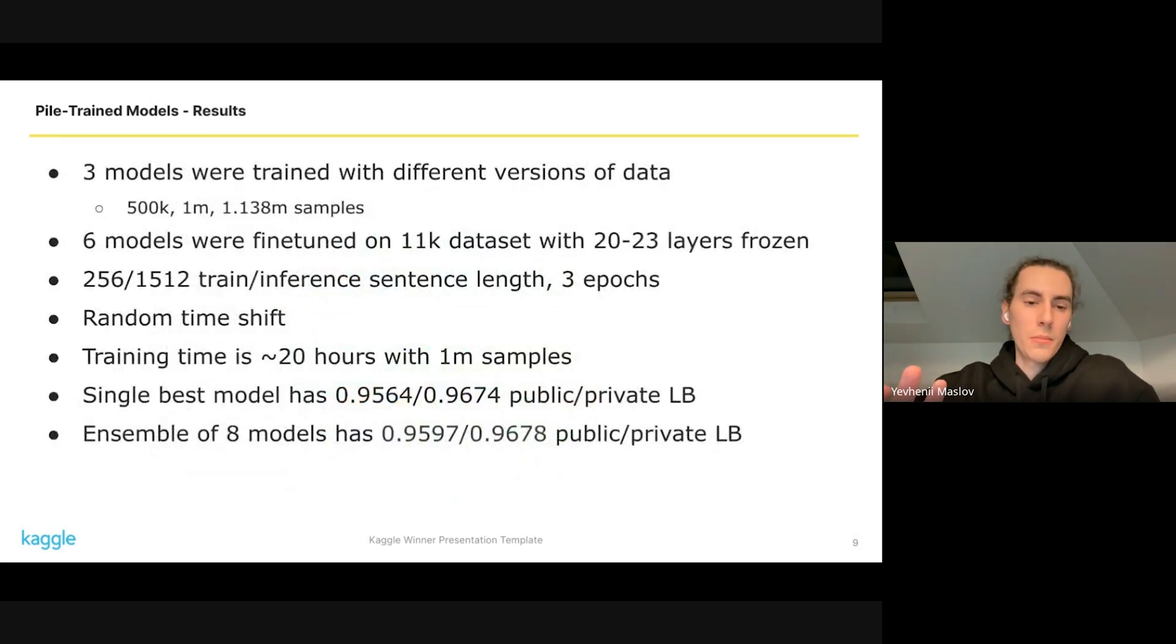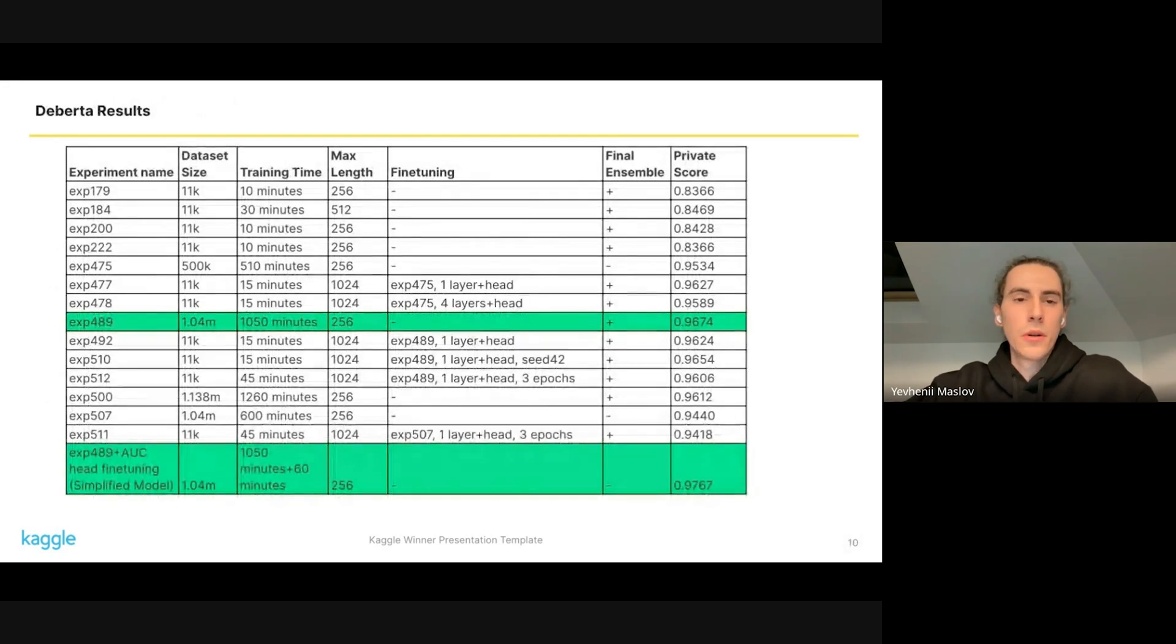We trained three models using different versions of data and used these three states to fine-tune another six models on Persuade essays. We used small sentence one and random time shift for training and trained every model for three epochs. You can see the individual model scores on this table. The highlighted models are the best single performed model and the simplified solution - it's basically the same model but the second one is with a fine-tuned head.